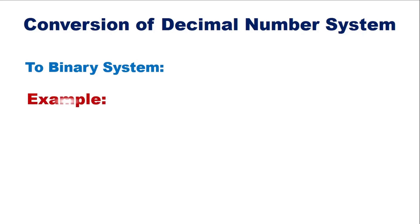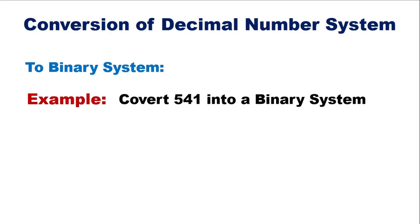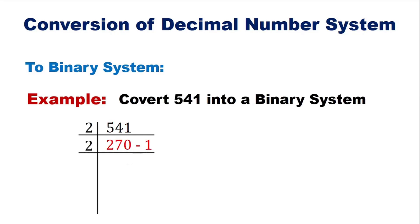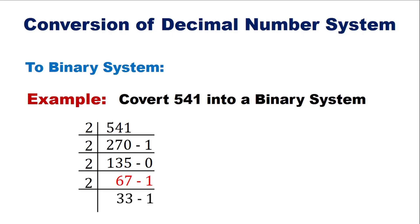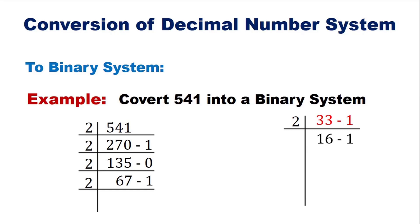इसके लिए हम एक example consider करते हैं. इस नंबर का जब हम 2 के साथ divide करेंगे तो हमें quotient और remainder 1 हासल होगा. इस नंबर को जब 2 के साथ divide किया जाएगा तो हमें अगला नंबर हासल होगा. इस नंबर को 2 से divide करने पर हमें 8 हासल होगा, और remainder हमें 0 मिलेगा.